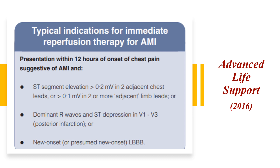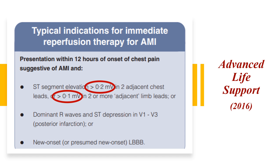What they said was that to qualify a patient for having a STEMI, you need to have a presentation within 12 hours of onset of chest pain suggestive of an MI, and you need to have two millimeters of ST elevation in two adjacent chest leads, or more than one millimeter in two or more adjacent limb leads. So: more than two millimeters in chest leads, more than one millimeter in limb leads — this is the ALS definition that most of us follow.